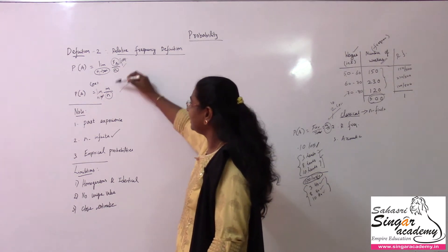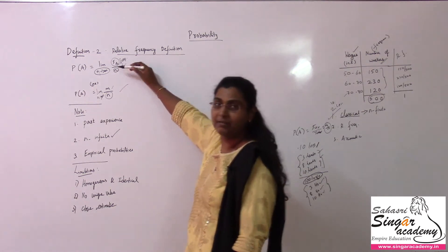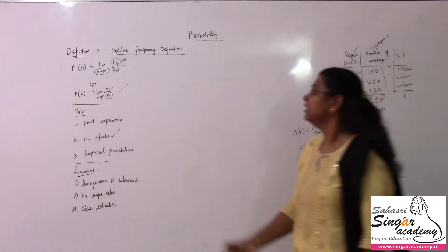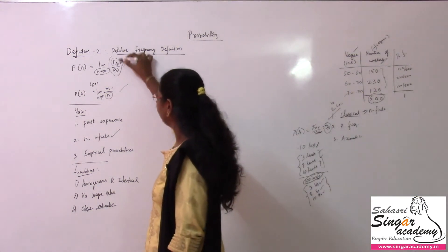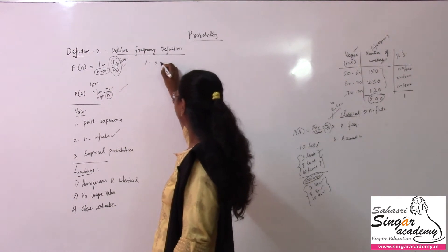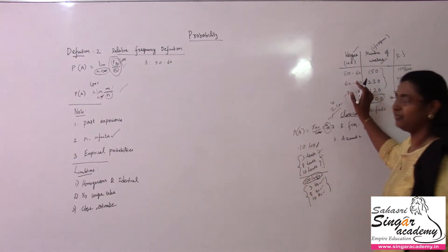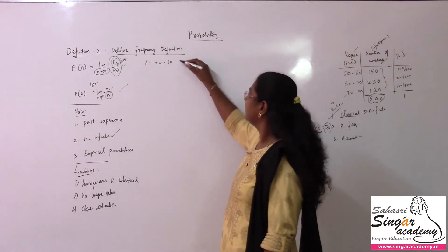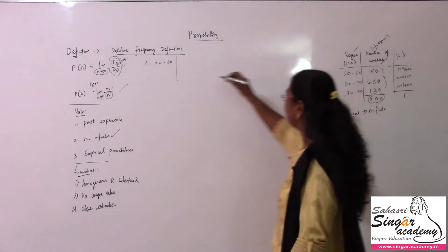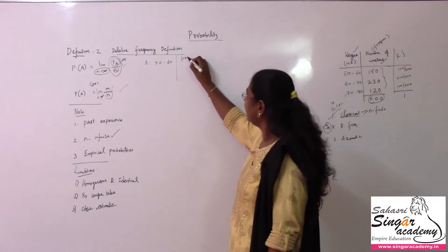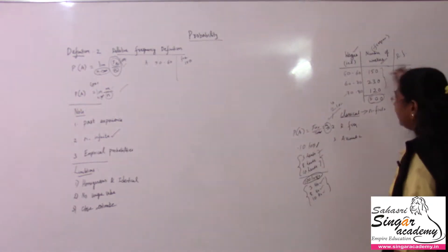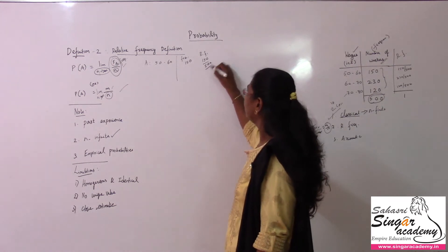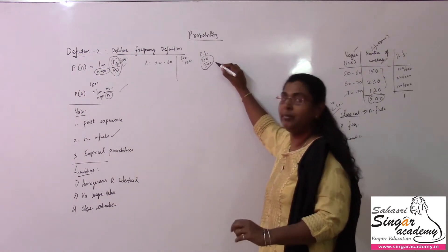We use f(A) instead of direct m — f(A) means we are talking about frequency, and not just frequency, but relative frequency. So this value will be the relative frequency. If I go for event A with respect to wages 50 to 60 rupees, the frequency will be 150, and the relative frequency will be 150 divided by 500. This is the probability value.